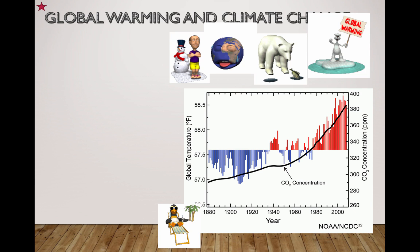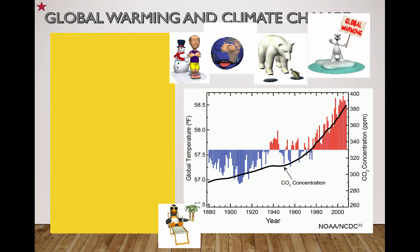We are continuing on from our first video about global warming and climate change. In the last video, we talked a little bit about the science behind it, the types of radiation, short wavelength versus long wavelength. Now we're going to talk about the impact a little bit and look at some of these graphs and some of the evidence.